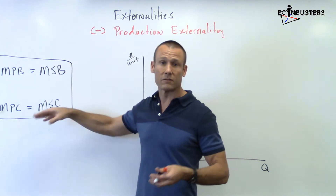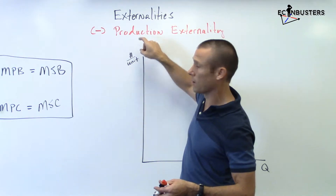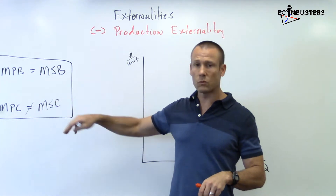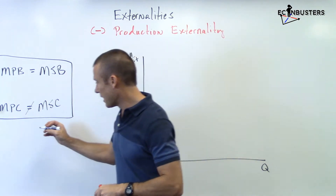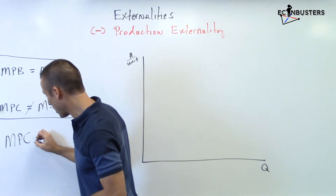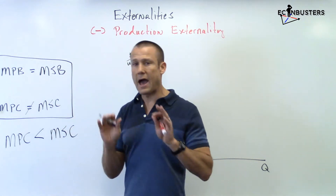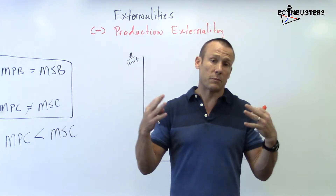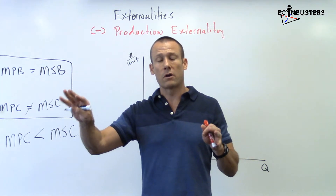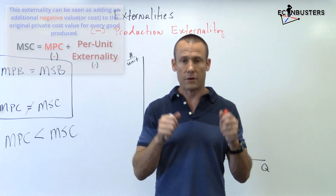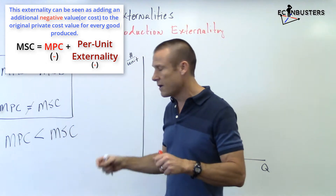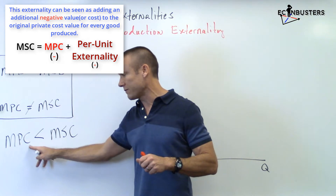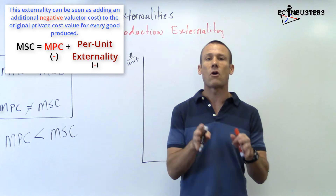We're doing negative production externalities. In this case, MPC and MSC are not equal — as soon as they're not equal, we've got an externality from production. Specifically, we're going to have a situation where marginal private cost is less than marginal social cost. How? The producer incurs their usual costs, but on top of that, third parties are incurring an additional cost. Go back to that pollution example — they're making the good, emitting pollution, and that pollution harms third parties. That additional third-party cost makes the marginal social cost greater than the marginal private cost. The difference between these two is the harm or cost to third parties.